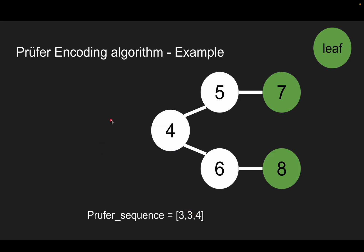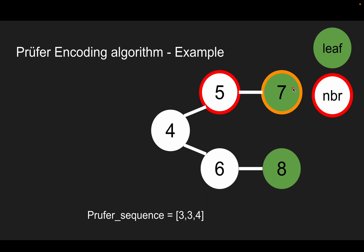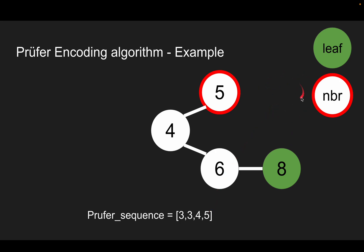In the fourth iteration, we find the leaf node with the smallest label, which is 7. We find its neighbor and add its neighbor to the Prüfer sequence. Then we remove the leaf node.